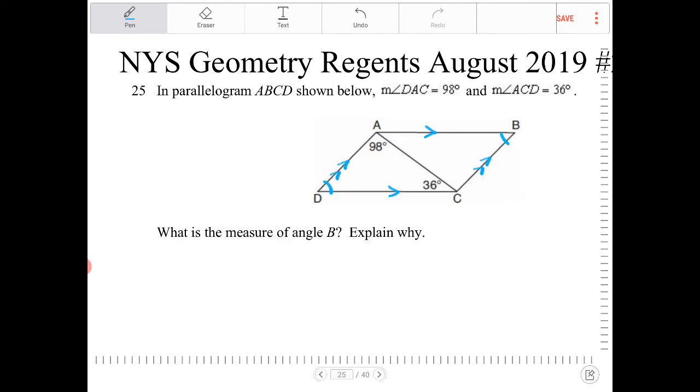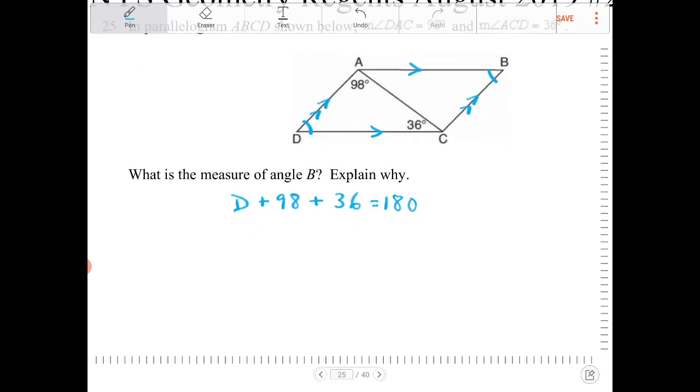So to do that, I'm going to say D plus 98 plus 36 is equal to 180. Add together 98 and 36, what do I get? I get 134. Subtract 134 from both sides. I will end up with 46.